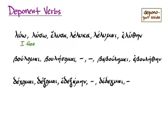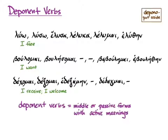What has happened with these verbs is that they have put aside their active forms — they've just let them go — and these verbs only have middle or passive forms. So luo, with a nice active form you learned back in unit 2, means 'I free.' But bulomai, which looks middle or passive, means 'I want,' and dechomai, which also looks middle or passive, means 'I receive' or 'I welcome.'